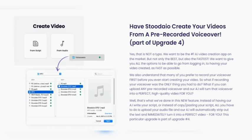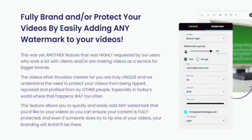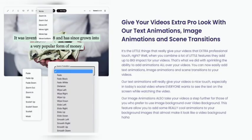Features two and three, the speech-to-video feature: if you have spoken your script, Stodeo 2.0 recognizes your wording and creates the script in text format. Feature four: the automatic watermark feature allows you to easily add your own watermarks to make your content stand out. Feature five: increased opacity of text colors with added text animation, image animation, and screen transitions.